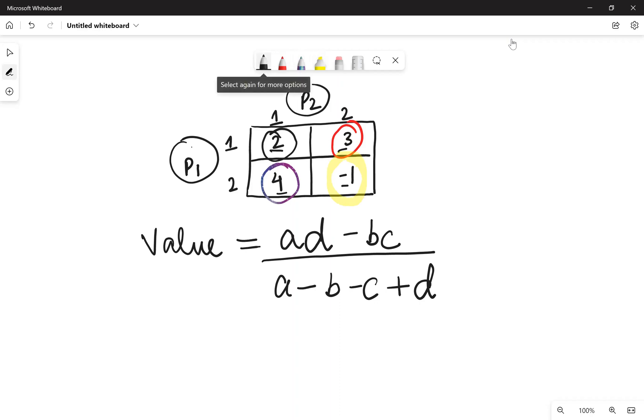So when we substitute these values in this particular formula, we get 2 times minus 1 minus 3 times 4, divided by 2 minus 3 minus 4 plus minus 1.